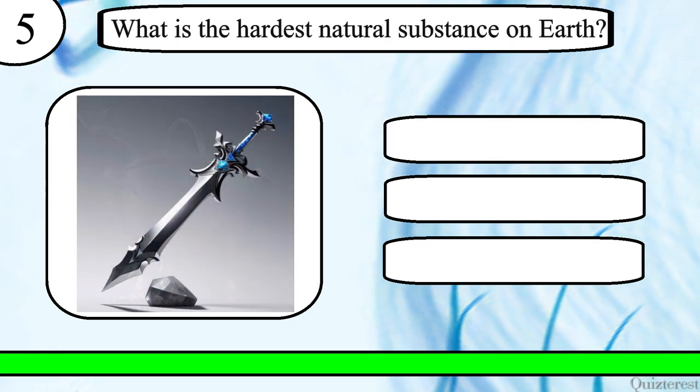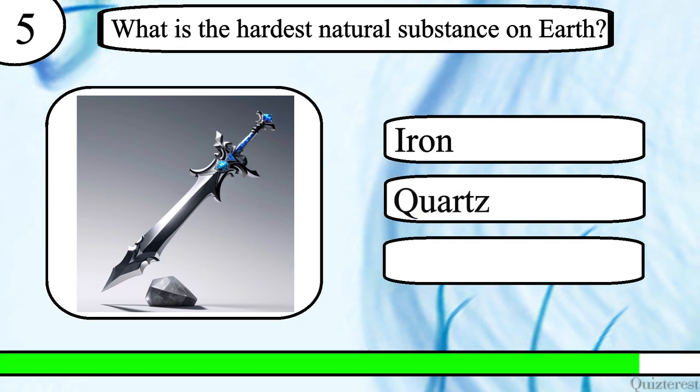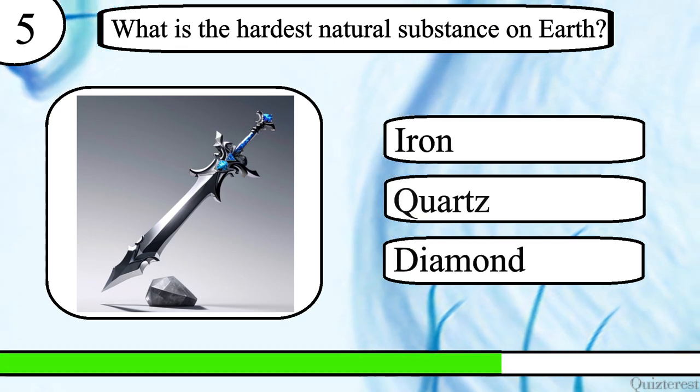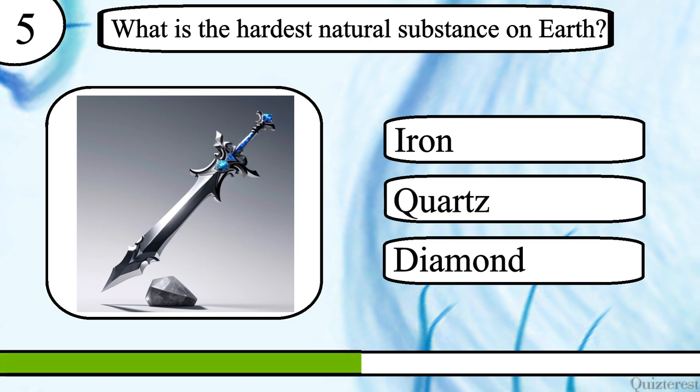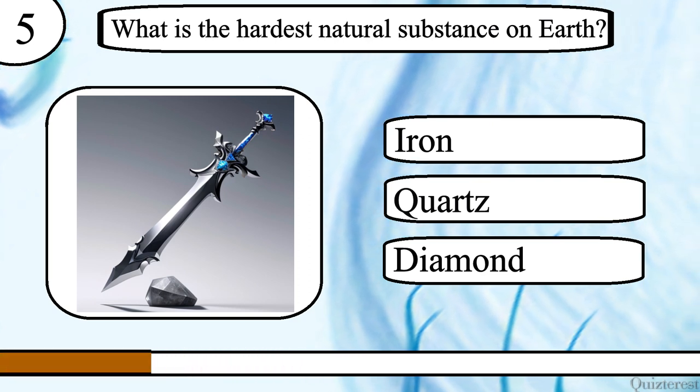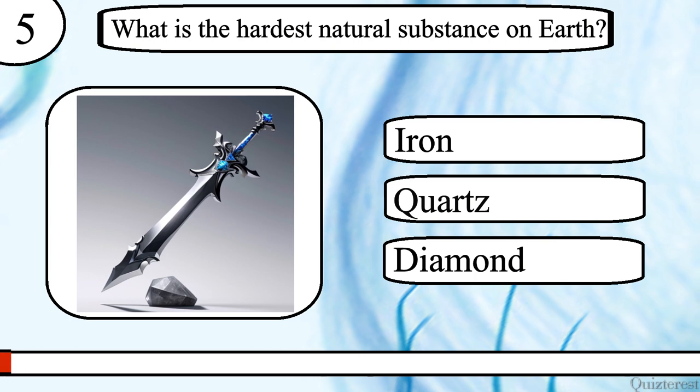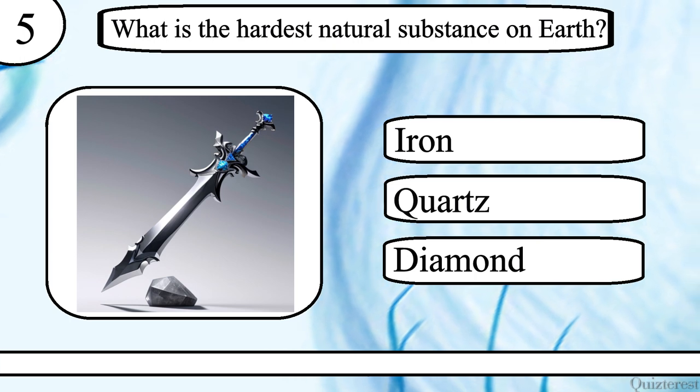Question 5. What is the hardest natural substance on Earth? Iron, quartz or diamond? The correct answer is diamond.